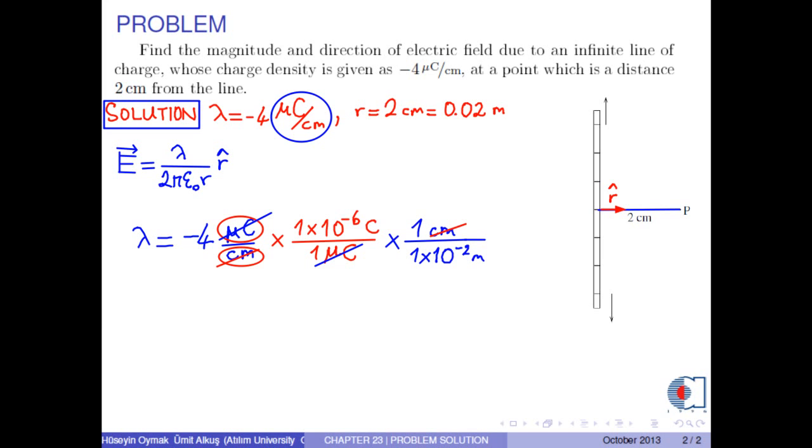Therefore, we obtain the desired unit, coulombs per meter. Now, the charge density can be expressed in SI unit as negative 4 times 10 to negative 4 coulombs per meter.